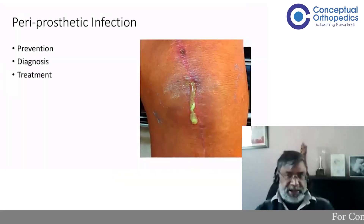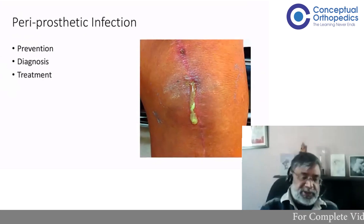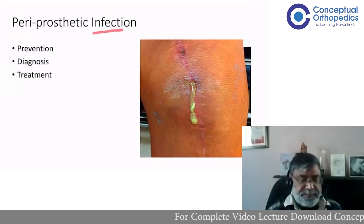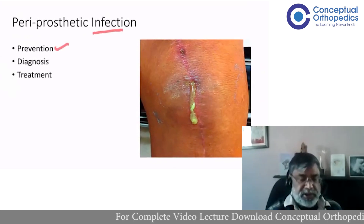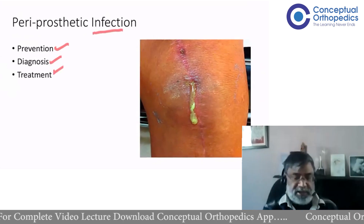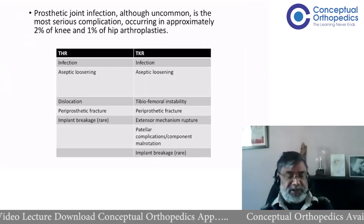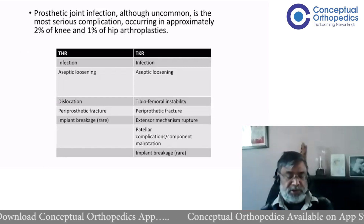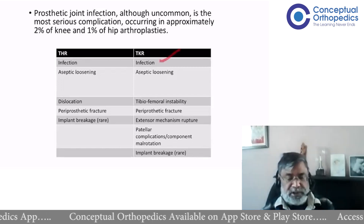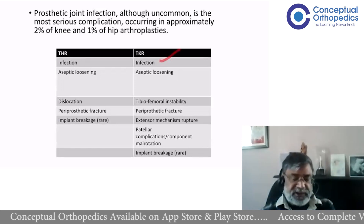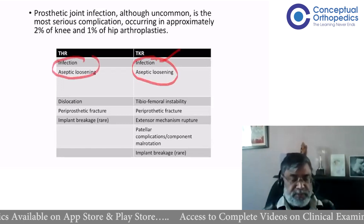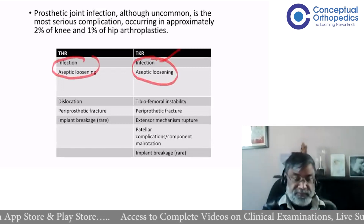Hello students. This topic is on periprosthetic joint infection, which is a quite big topic. In our app we have covered it in three forms: prevention, diagnosis, and treatment, but today I'll summarize this in this lecture. Periprosthetic joint infection, especially for hip and knee, is a very common cause for revision surgery. In fact, for the knee it is twice as common as the hip. For the knee, the top cause is infection, but together infective and non-infective loosening of the implants are the most common causes for revision surgery for both hip and knee.